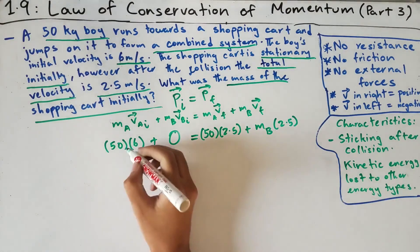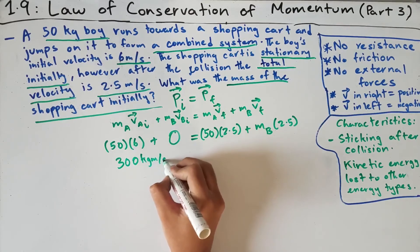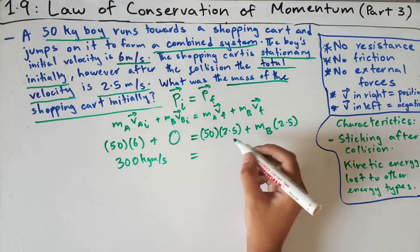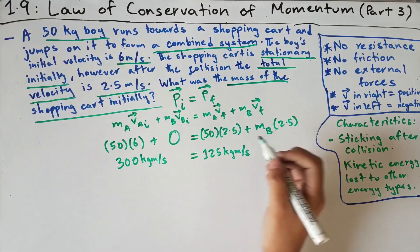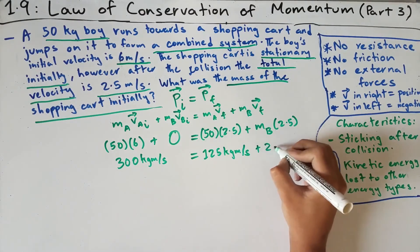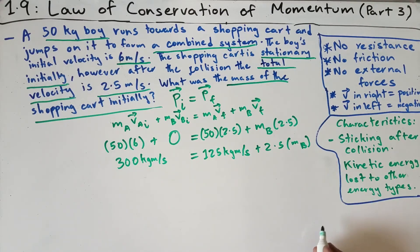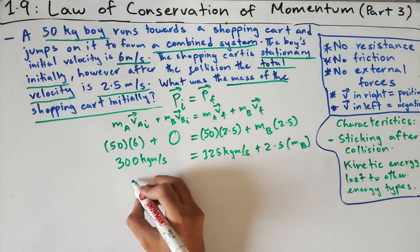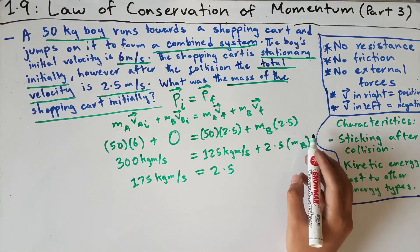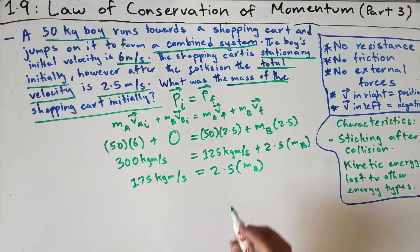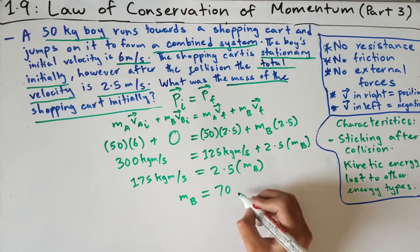Simplifying: 300 = 125 + 2.5 × m_cart. Subtracting 125 from both sides gives 175 = 2.5 × m_cart. Dividing by 2.5 gives m_cart = 70 kilograms.